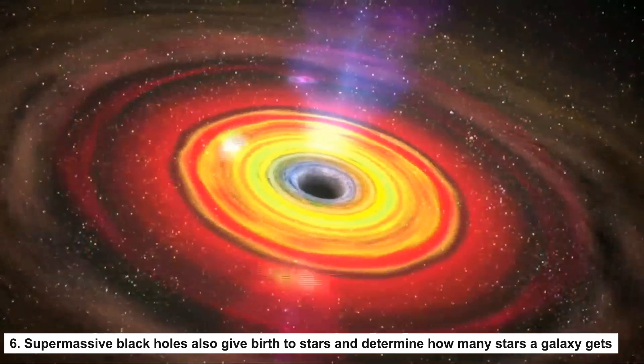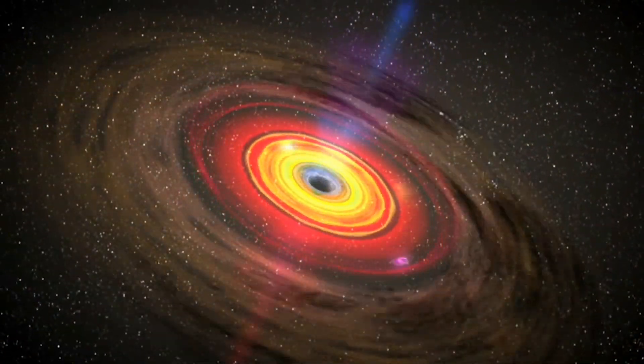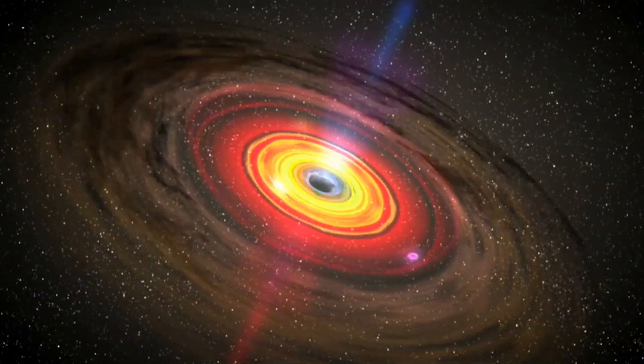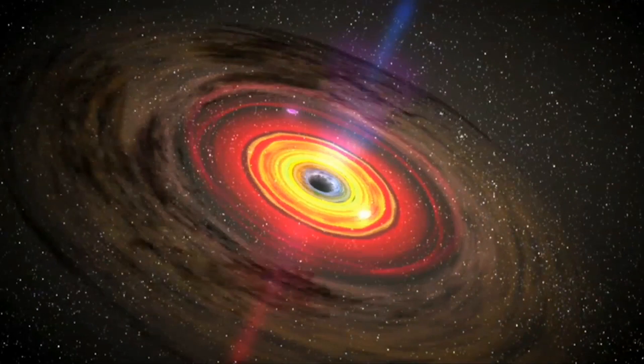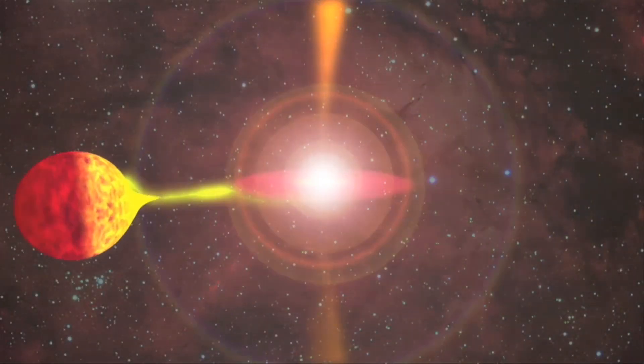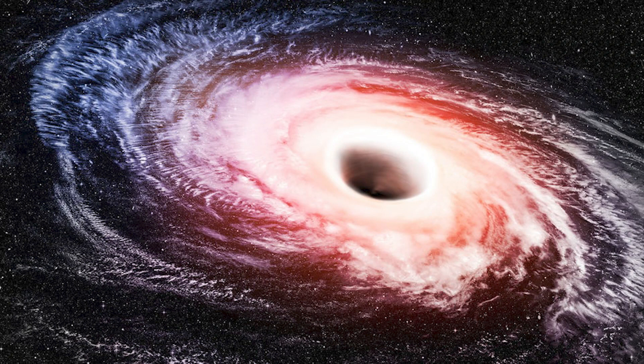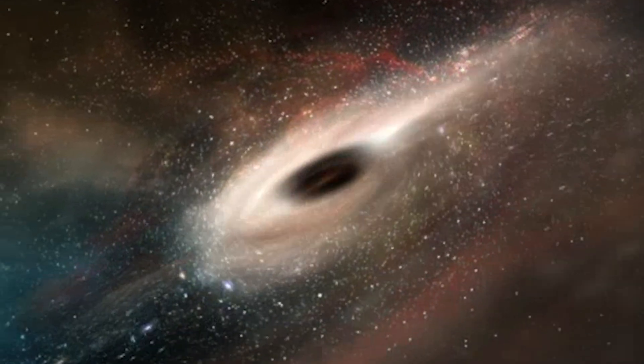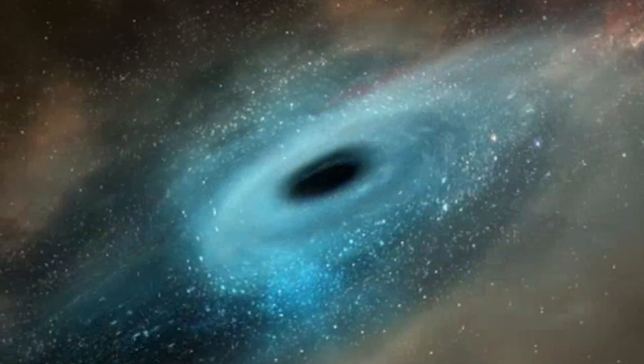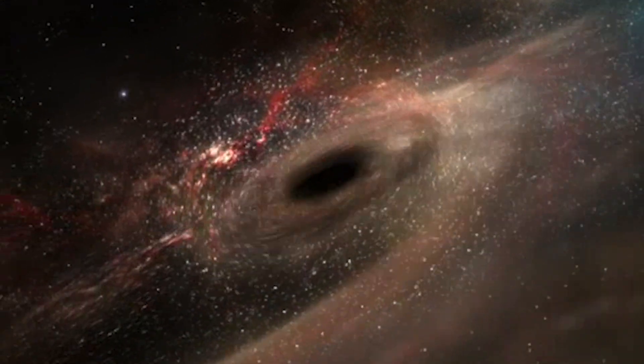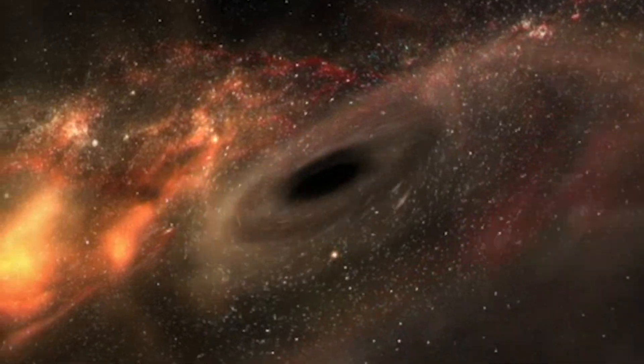Number 5: Supermassive black holes also give birth to stars and determine how many stars a galaxy gets. Just as planet-sized fragments are ejected from the accretion disk, a recent discovery shows that massive black holes occasionally release enough material to form entirely new stars. Even more remarkable is that they have descended into deep space, some far beyond their own galaxies. A 2018 study in the journal Nature suggests that supermassive black holes not only create new stars, but also control how many stars a galaxy gets. Star formation stops faster in galaxies with smaller black holes at the center.